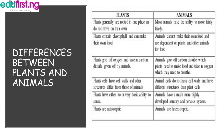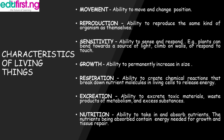Plants have either no or very basic ability to sense, while animals have a much more highly developed sensory and nervous system. Plants are autotrophic while animals are heterotrophic.